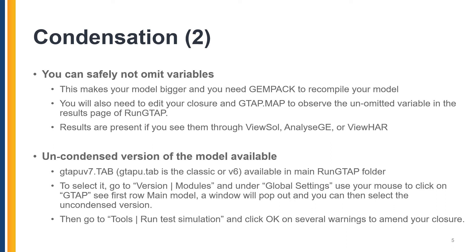After doing this, go to Tools and run a test simulation. After a series of warning messages that you click OK on — Run-GTAP is identifying new variables that it considers new due to memory — you know that you are now using the uncondensed model. Click OK and the test simulation will run successfully using the new uncondensed model with the new closures and the added variables that are no longer back-solved, substituted, or omitted.